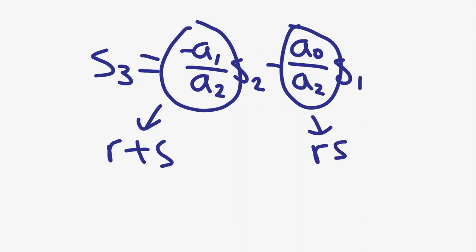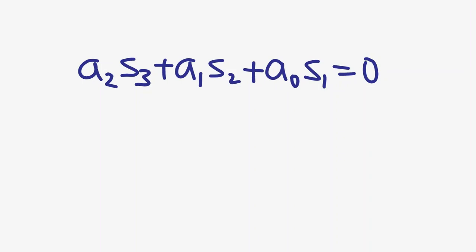If we do some algebraic manipulation to this equation, we get a₂s₃ + a₁s₂ + a₀s₁ = 0. This formula looks suspiciously clean.